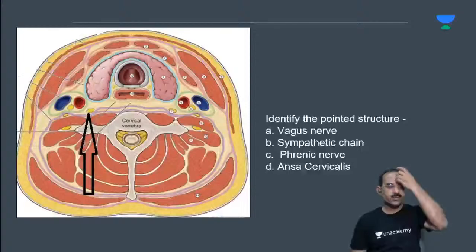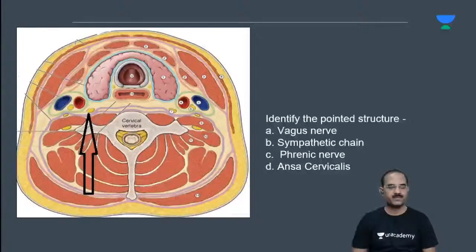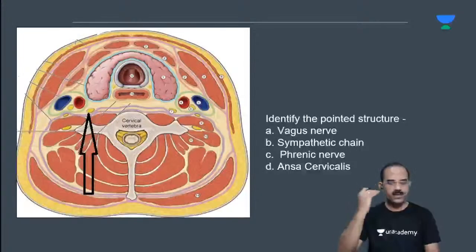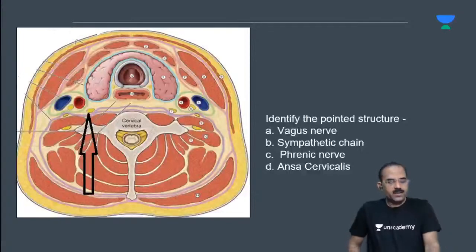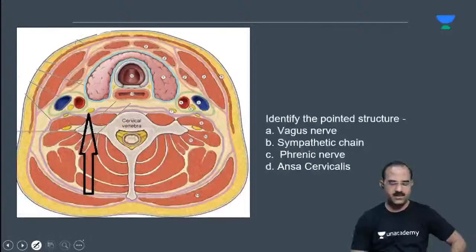I've given you four options. Any guesses? This is a transverse section taken through the neck. It is not vagus — what do you think this is? It's not vagus.